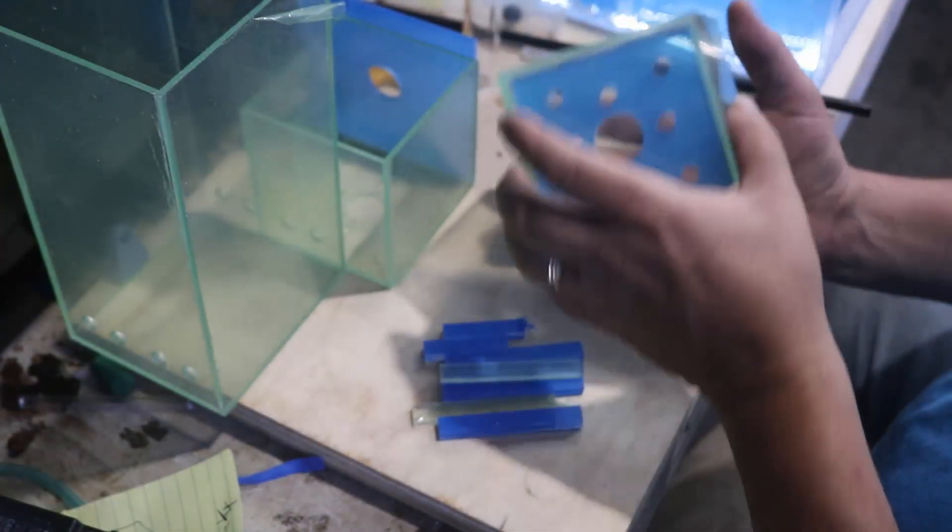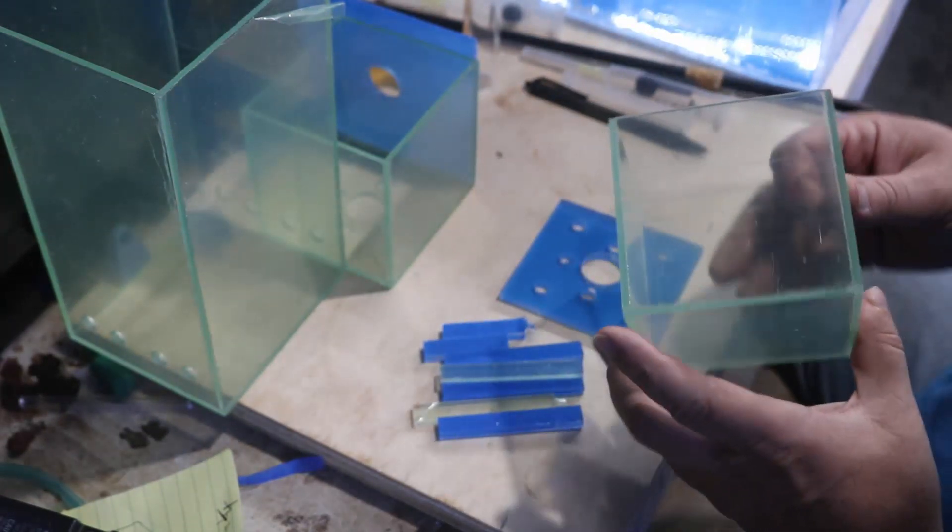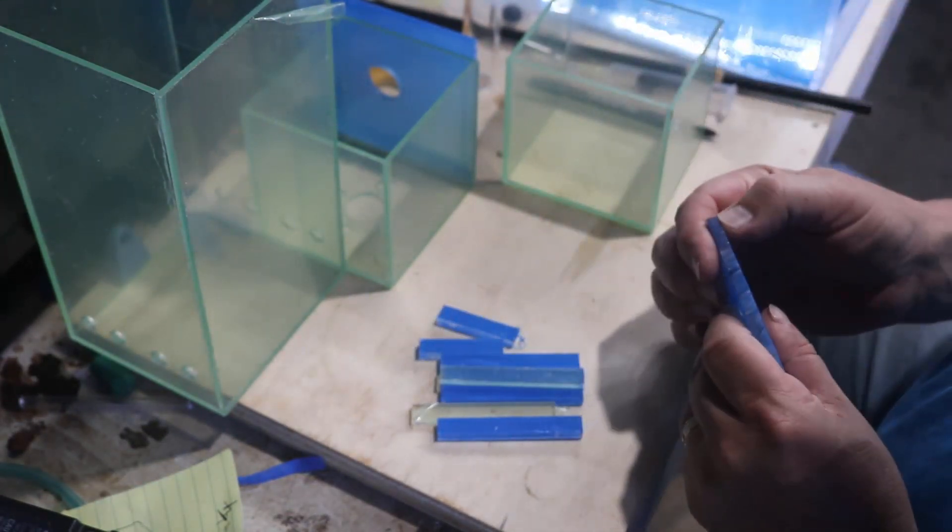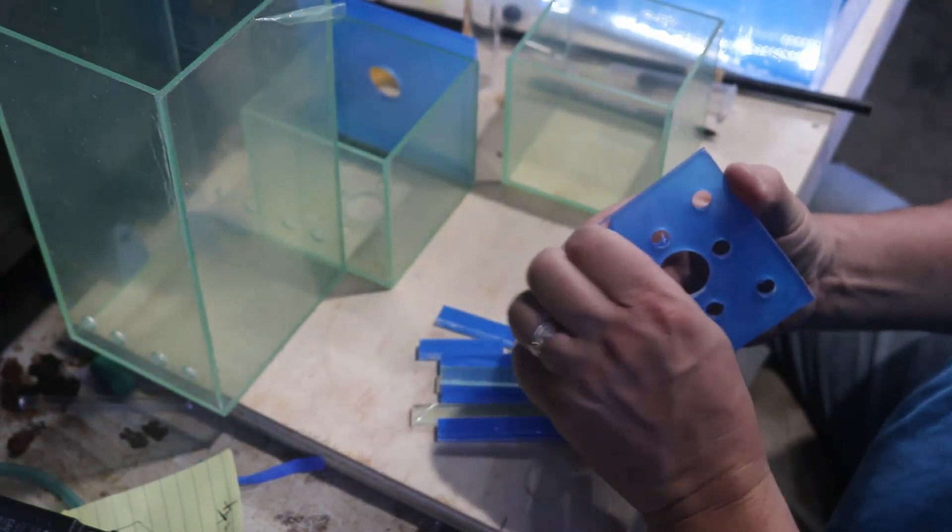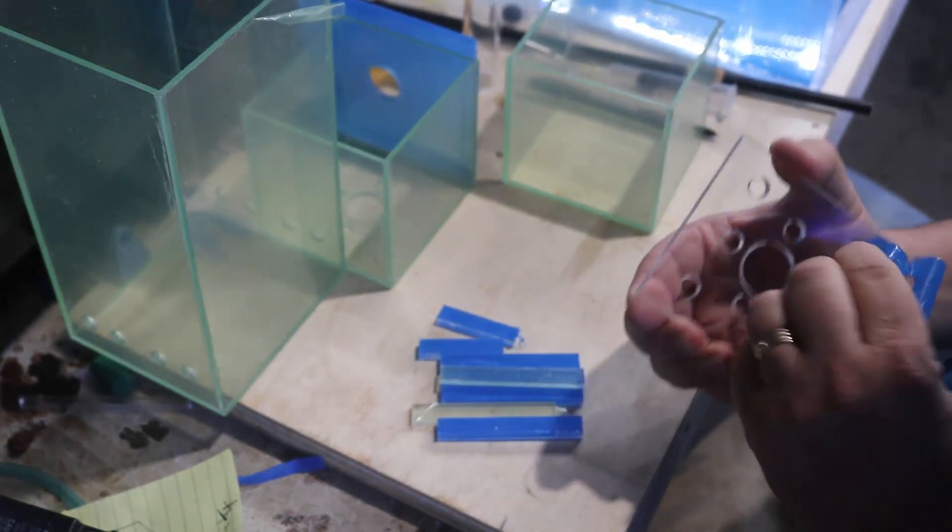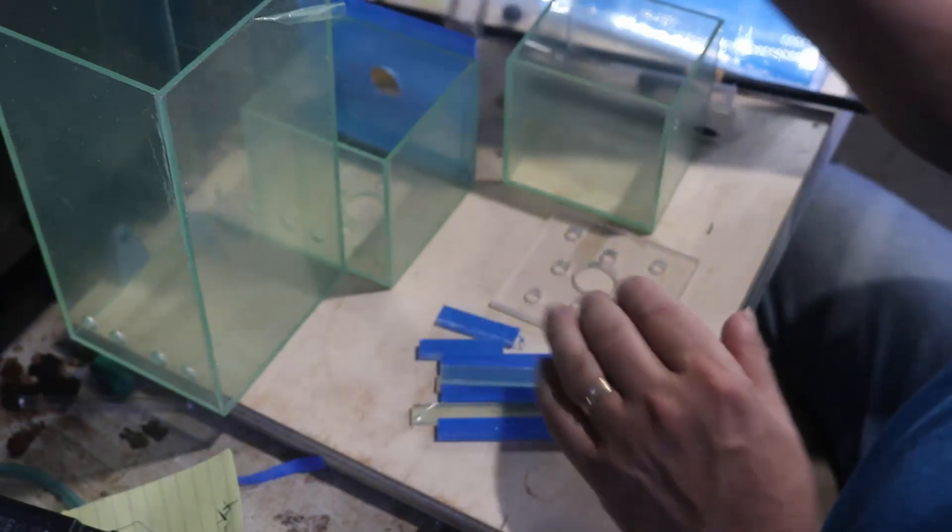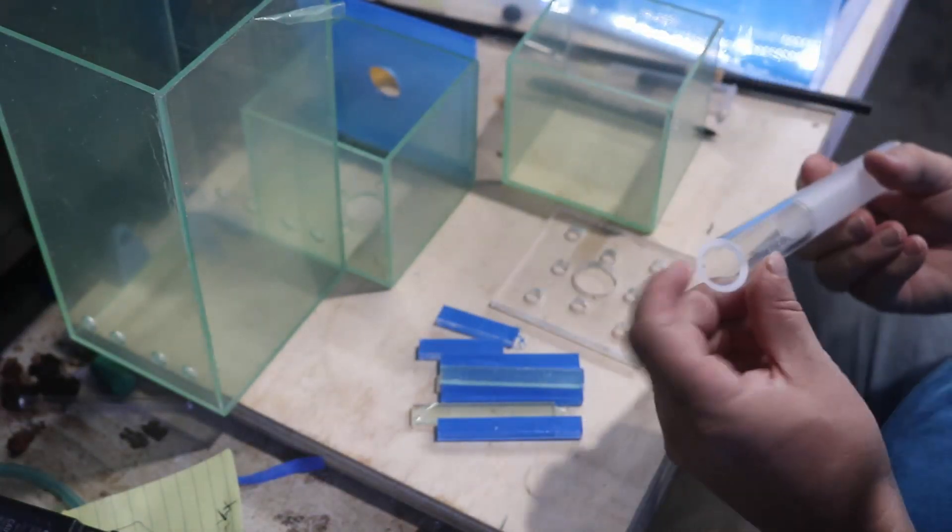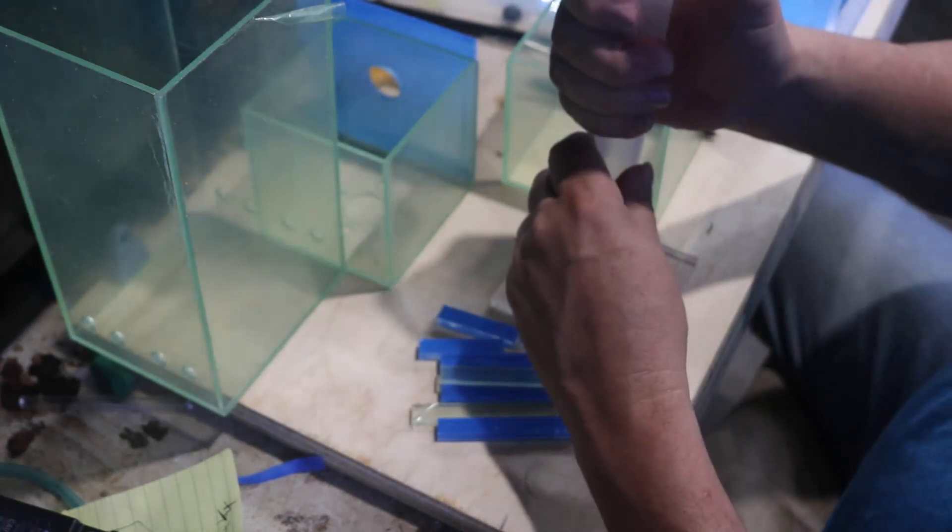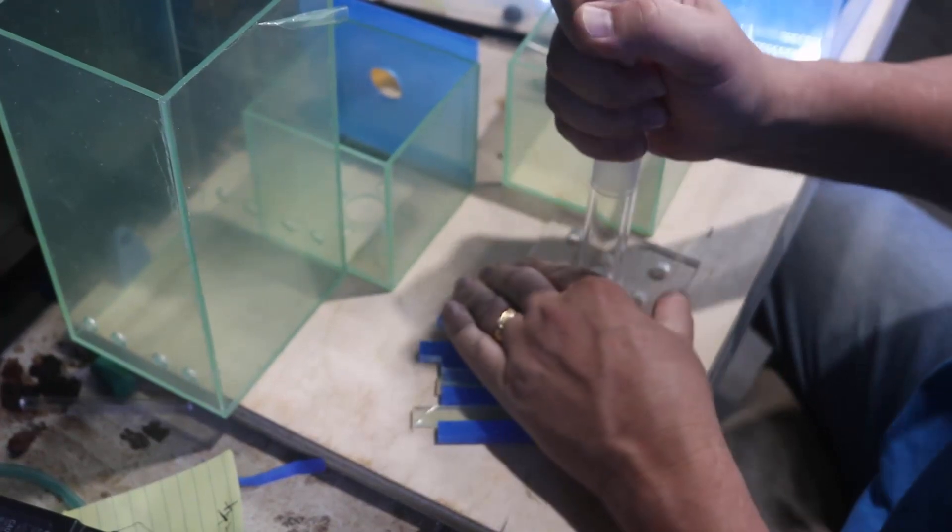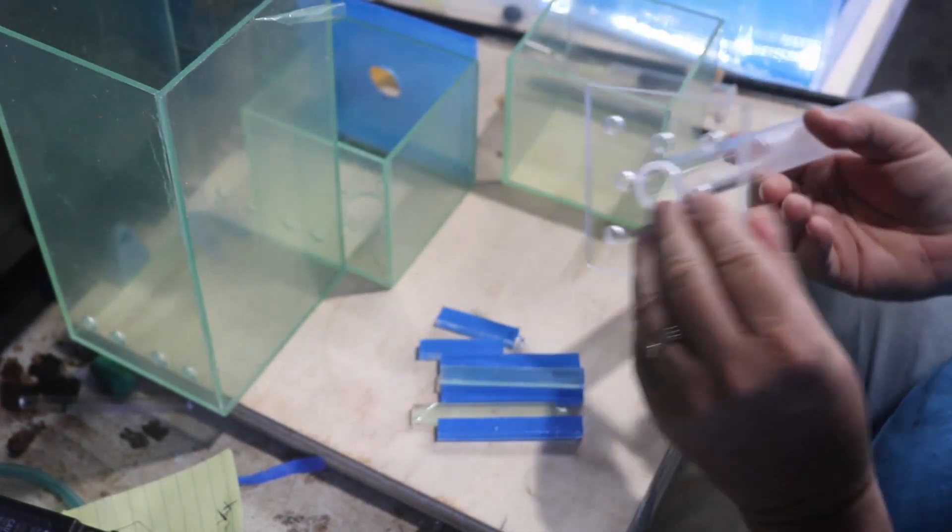What air driven does is air does not force water to go anywhere. What it does is it gets it flowing and let's say it encourages it to go a certain direction but if you have any kind of real restriction anything like a really dirty filter or whatnot the water is simply just not going to move. The air will go up, it'll churn the water in the pipe around a little bit but it doesn't really create enough suction for really dirty setups.